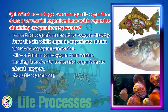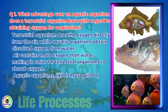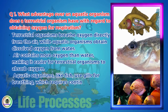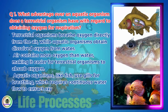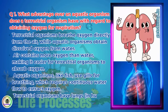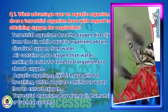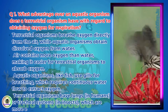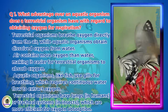Aquatic organisms, like fish, use gills for breathing, which requires continuous water flow to extract oxygen. Terrestrial organisms have lungs, in humans, or tracheal systems, in insects, which are more efficient for oxygen absorption.